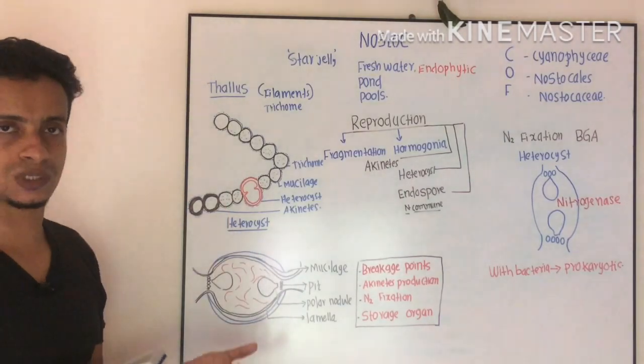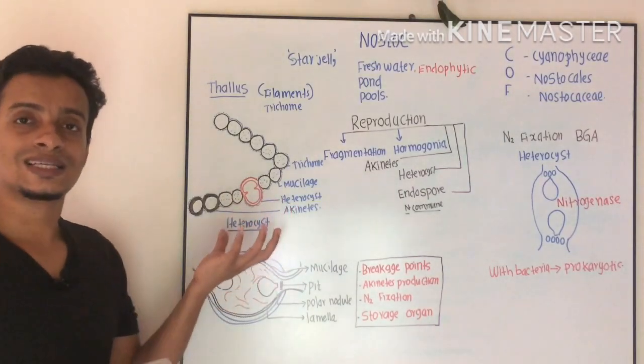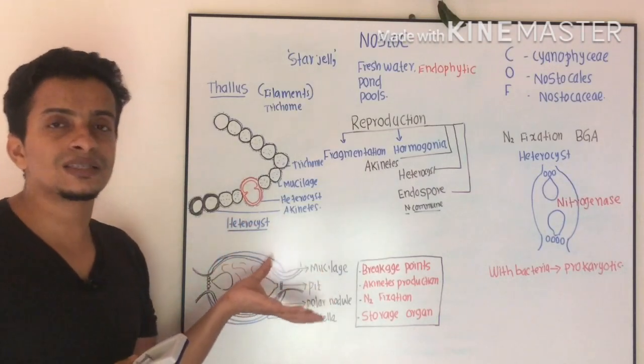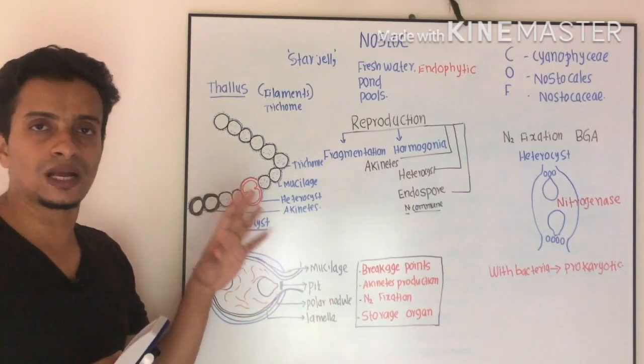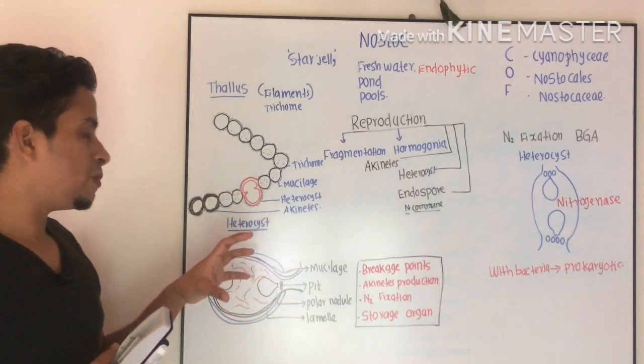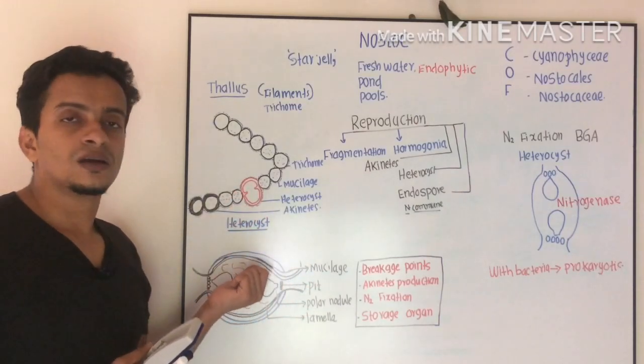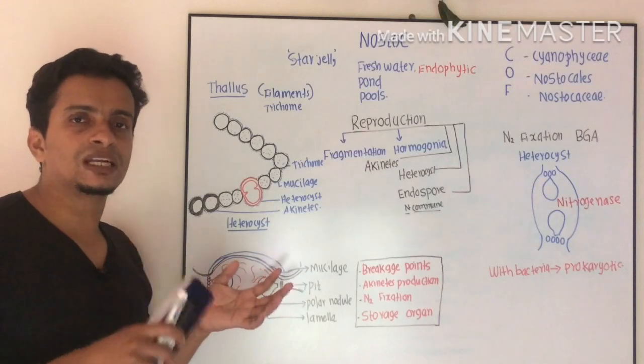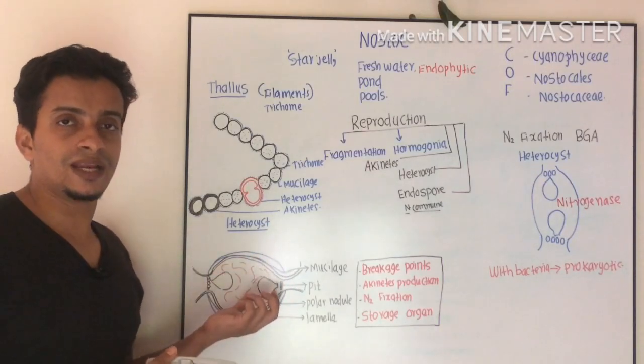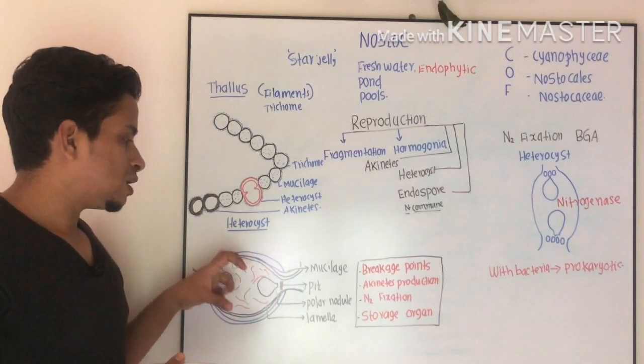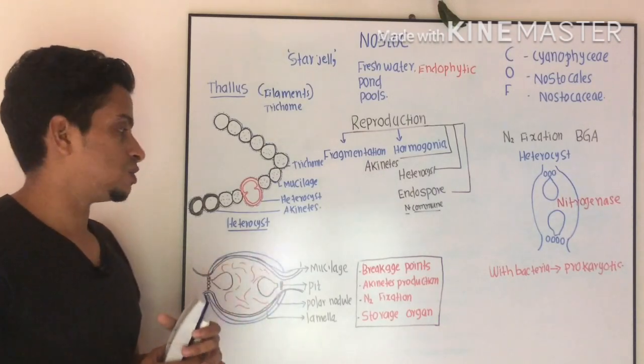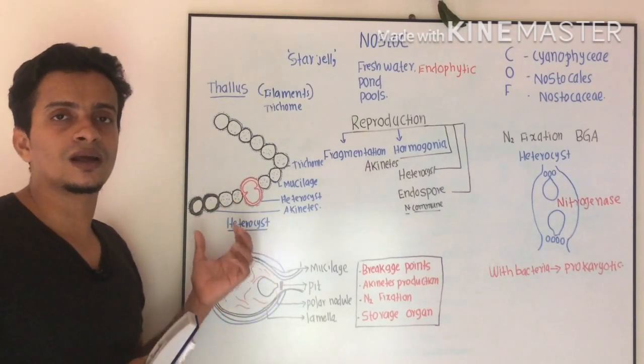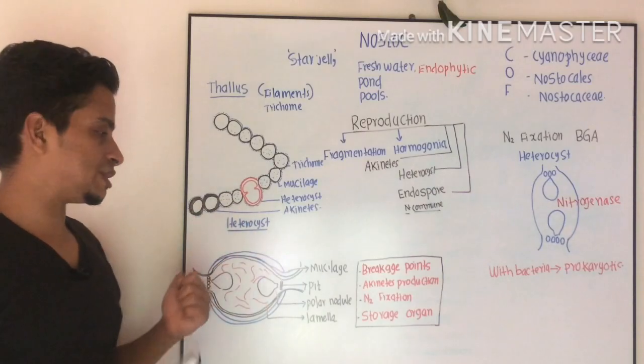During the formation of heterocyst, vegetative cells become larger, bigger in size. Then its photosynthetic pigments will degenerate. Now it will form this structure which is known as heterocyst. Here you can expect nitrogen fixation.